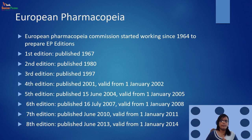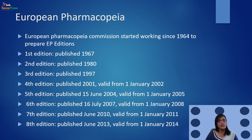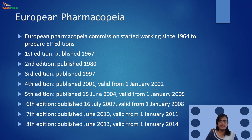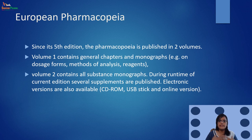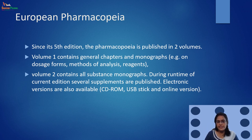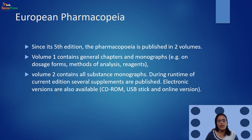Moving to European pharmacopoeia — the European pharmacopoeia commission started working in 1964 to prepare the European pharmacopoeia editions. Since its fifth edition, the pharmacopoeia is published in two volumes: Volume 1 contains general chapters and monographs, and Volume 2 contains all substance monographs. During the runtime of the current edition, several supplements are published.